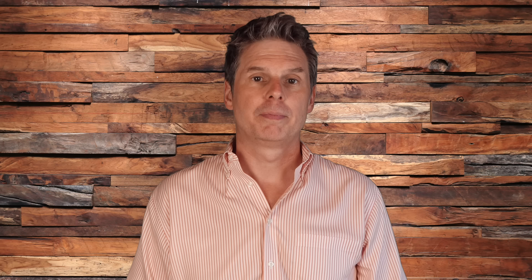Cause number 12: certain medications. Several classes of medications are known to cause insulin resistance, including antiretroviral drugs (used to treat HIV infection), second-generation antipsychotics, and corticosteroids. This is not an exhaustive list. If you take any medications for an extended period of time, have a conversation with your doctor about whether the medication can lead to weight gain, insulin resistance, or other side effects. Do not stop taking your medication just because you are worried about insulin resistance — always discuss your concern with your physician.